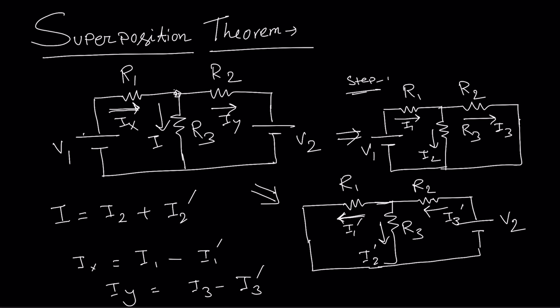Step one: draw the circuit with only one voltage source; the other voltage source is replaced by a short circuit. If there is a current source, replace it by an open circuit, since the internal resistance of a current source is infinity. Step two: draw the circuit with the other source. Calculate the individual currents, check the direction of current, and then do addition or subtraction. It's simple.